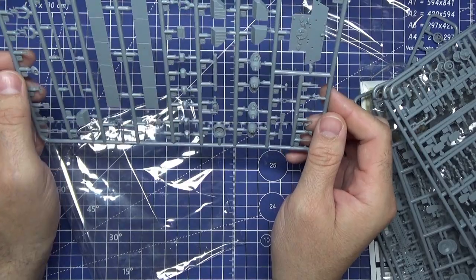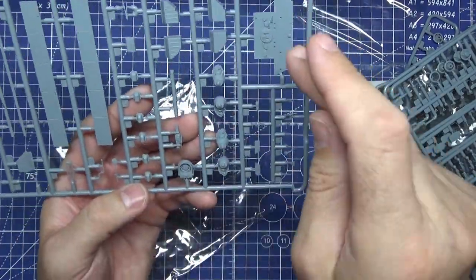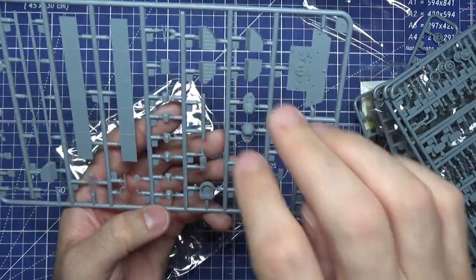Oh, we've got side skirts here. The rear section storage boxes.